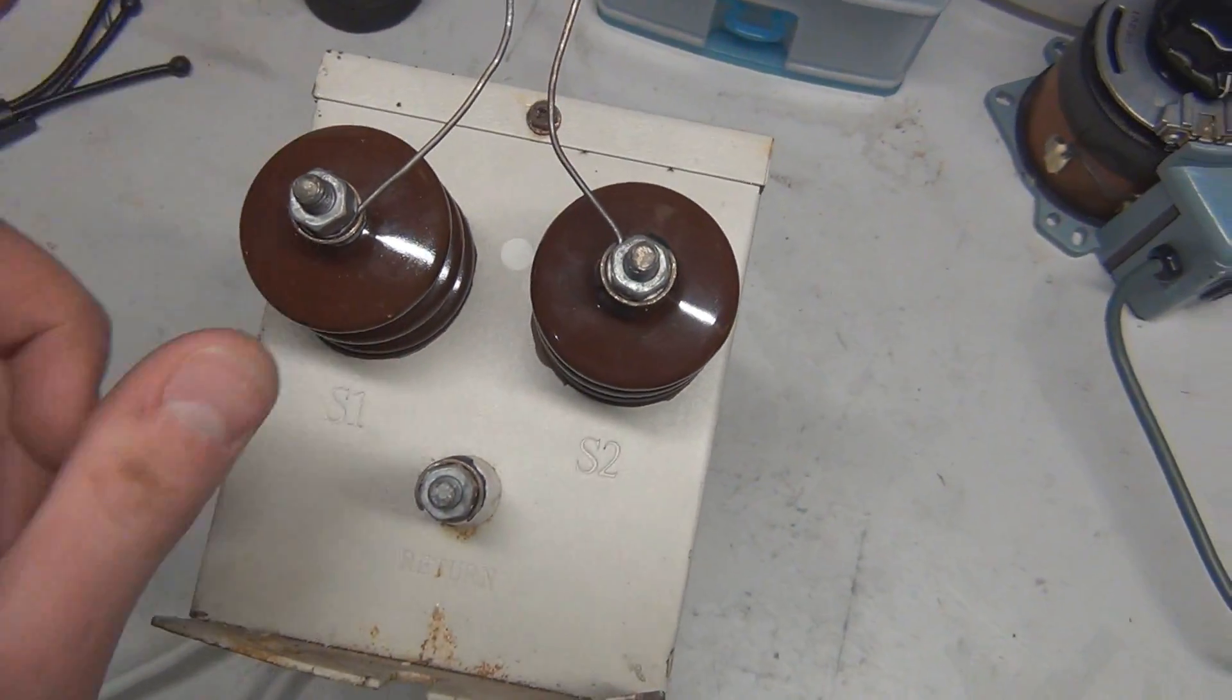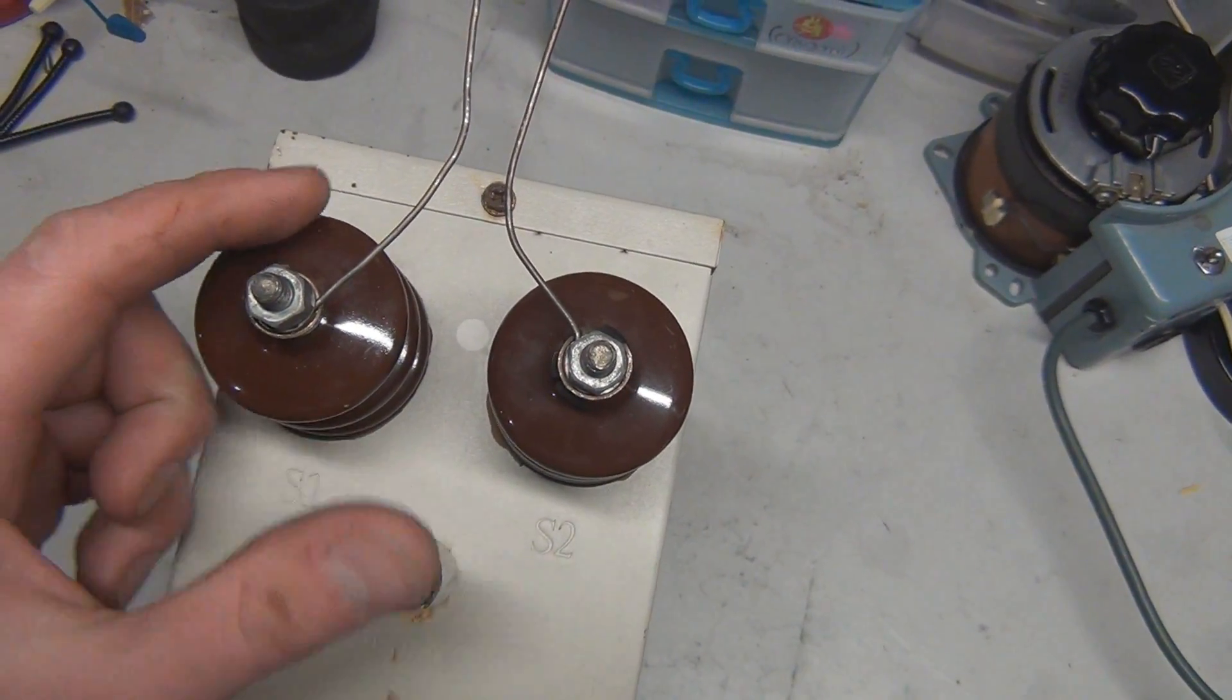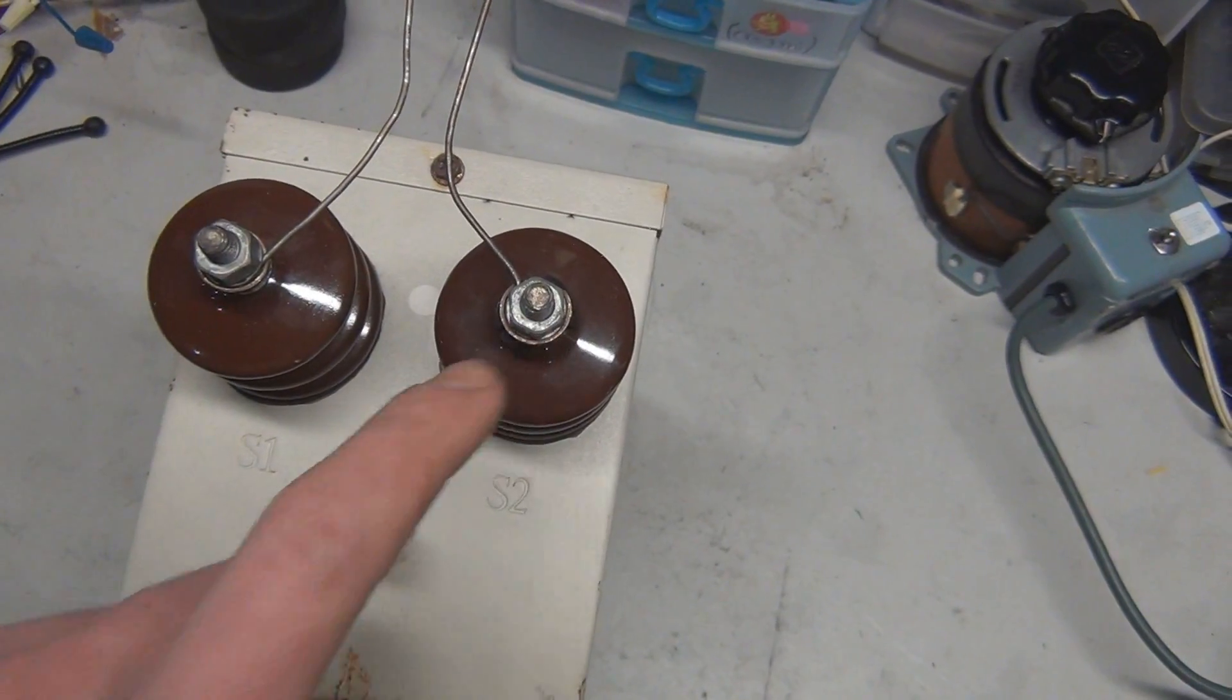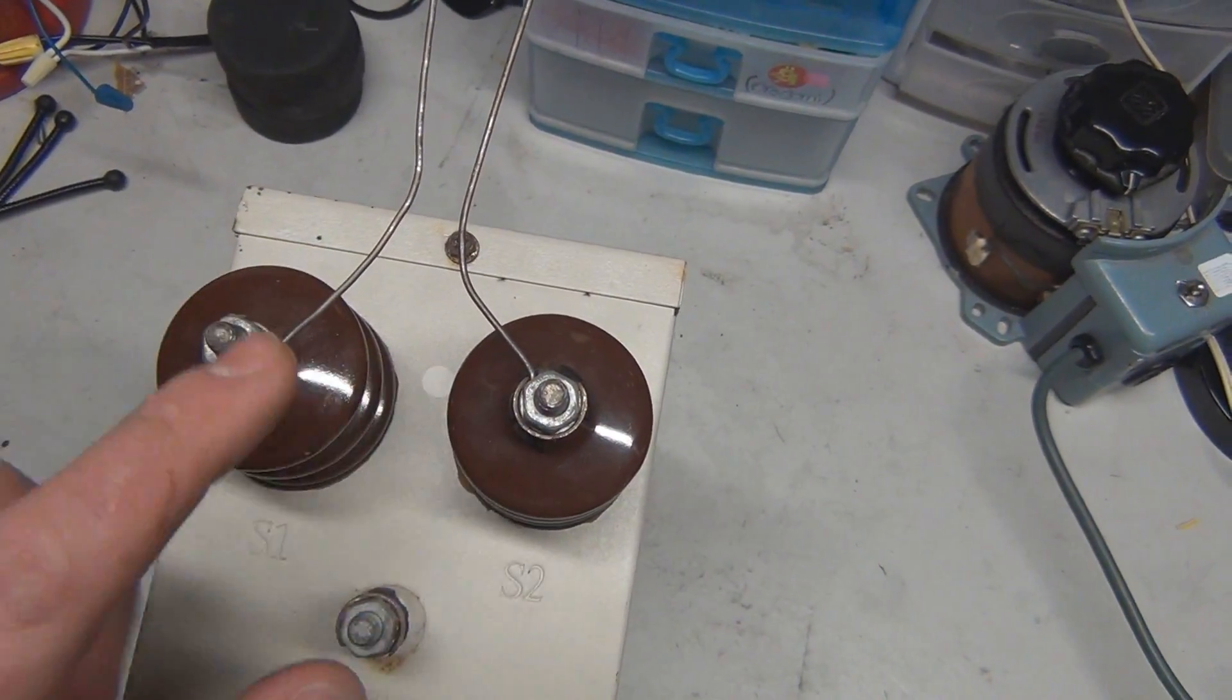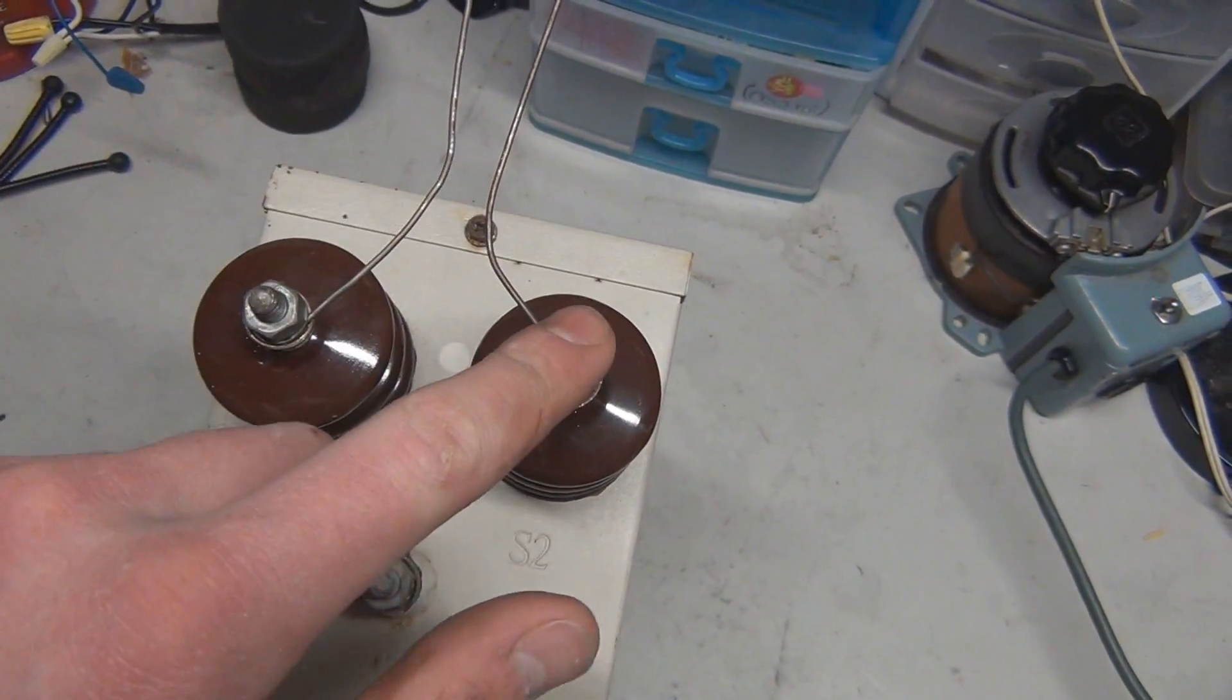So basically from here to here you have seven and a half kilovolts. From here to here you have seven and a half. And then because these are 180 degrees out of phase, both these give you 15 kilovolts between these two.